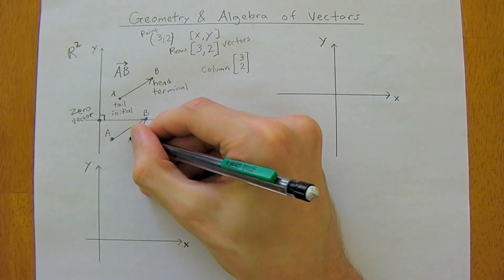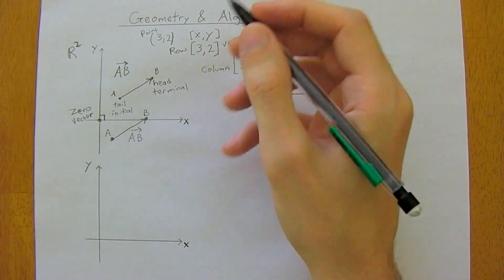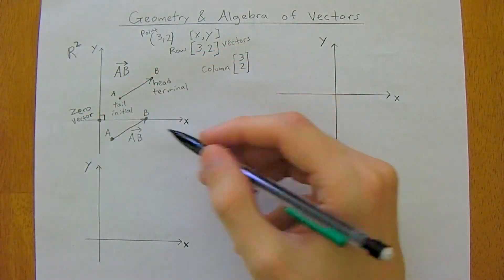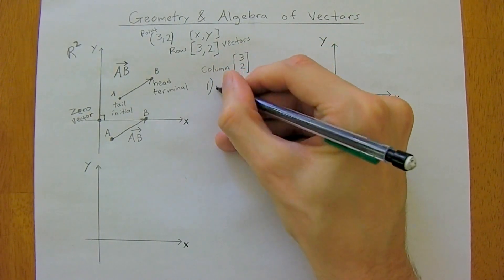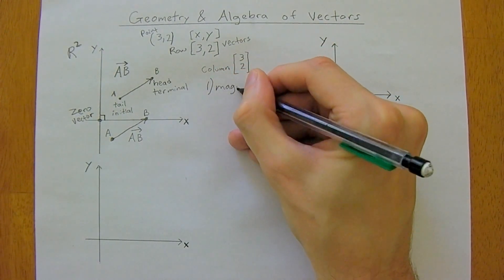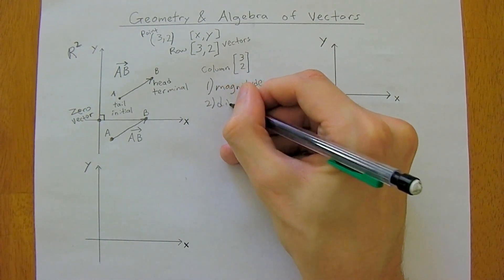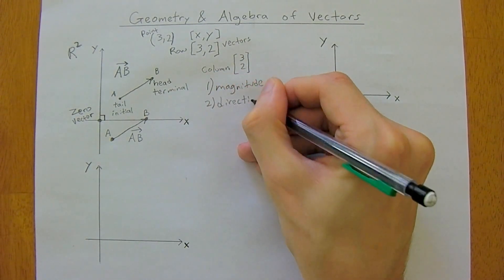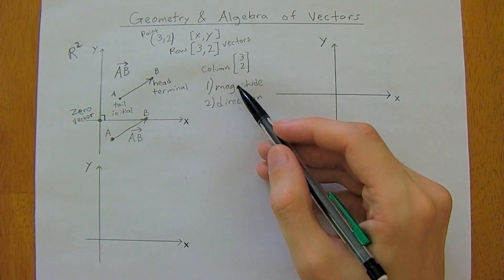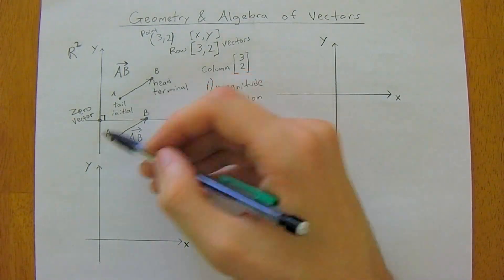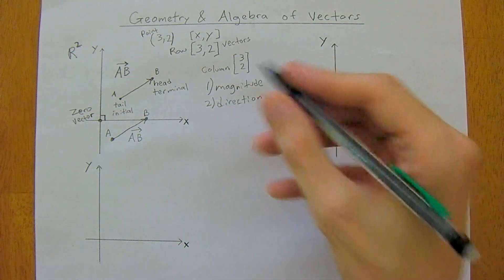This is identical, this is vector AB. You can move it anywhere, and as long as it has the two things: it needs a magnitude and it needs a direction. So magnitude is displacement or length. As long as these two are the same, this is the same vector.